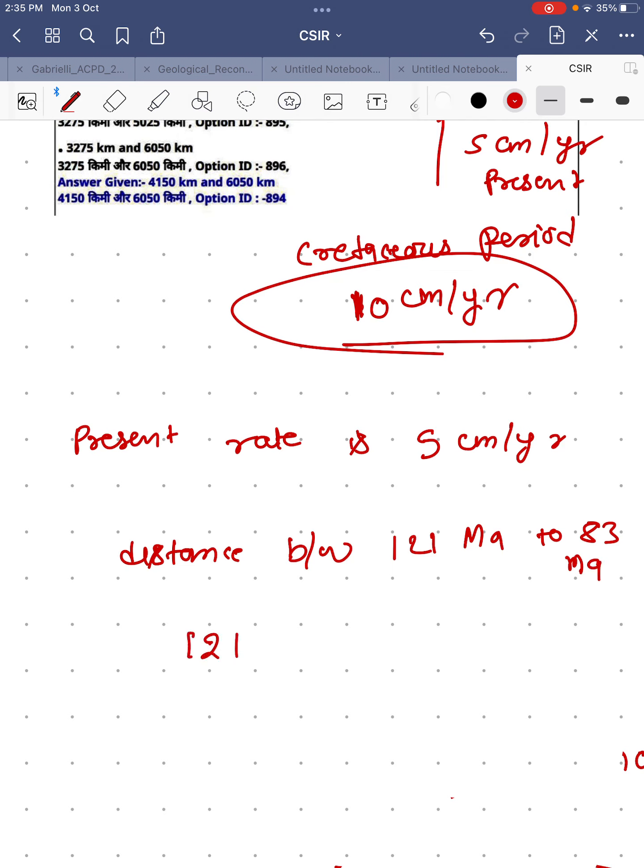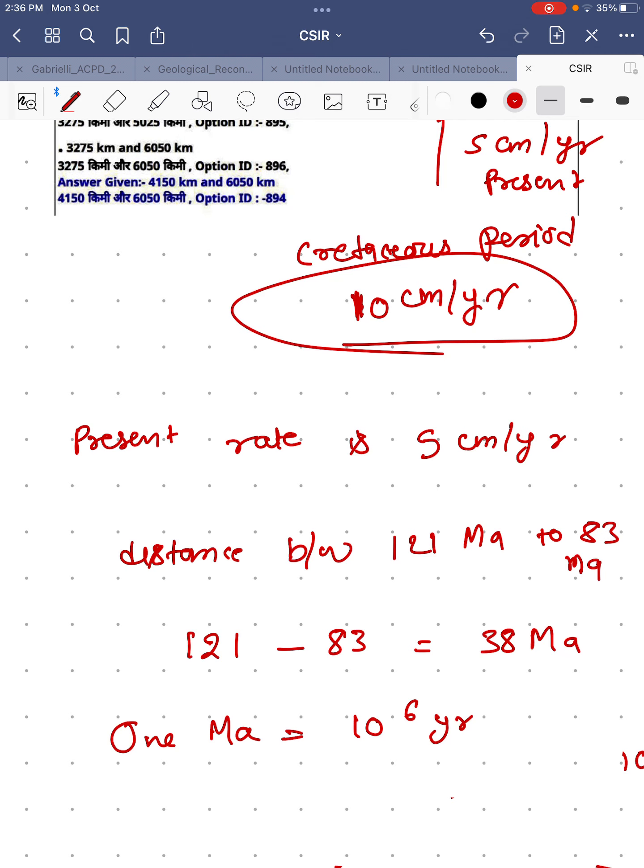So if we subtract 121 minus 83, it will be 38 million years. We know 1 million years is equal to 10 to the power 6 years, right? So 38 million years equals 38 into 10 to the power 6 years.